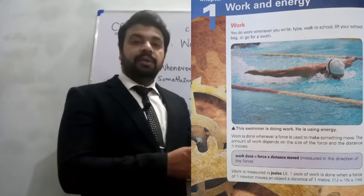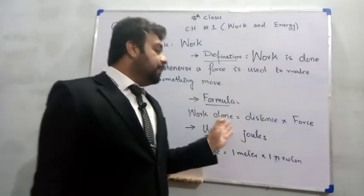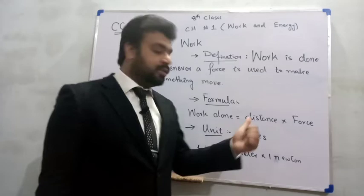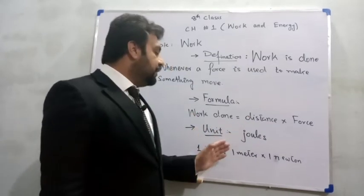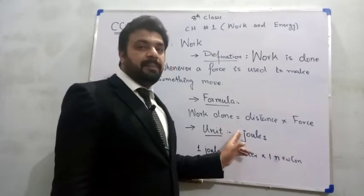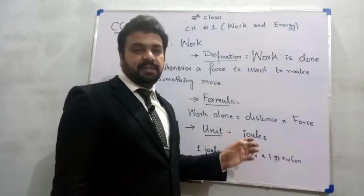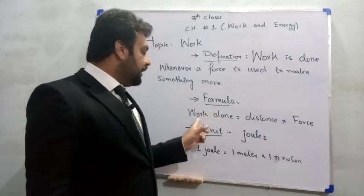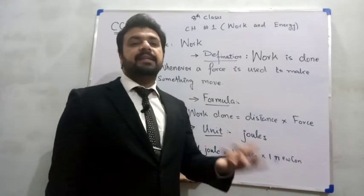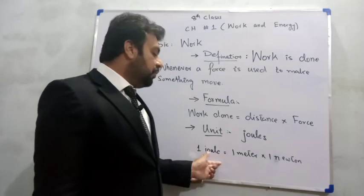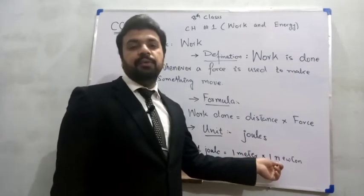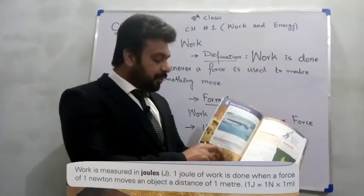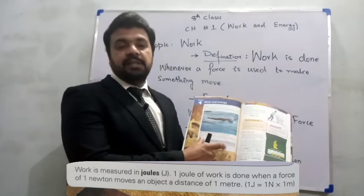Work کا formula یہ ہے: Work is equal to force multiplied by distance. جب force اور distance دونوں آپس میں مل جائیں تو work مکمل ہوتا ہے۔ Work کا unit joules ہے — j کو small letter سے لکھتے ہیں۔ One joule کی definition: one joule is equal to one meter multiplied by one newton. یہ آپ کی book کے bottom پر bold میں لکھا ہوا ہے۔